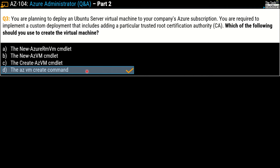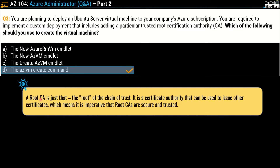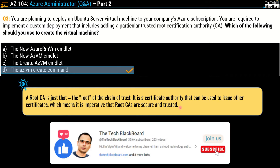In case you're wondering what a trusted root certification authority is — here is some documentation. The root CA is the root of the chain of trust; it's a certificate authority that can be used to issue other certificates, which means it is imperative that root CAs are secure and trusted. Now, there is one more variation of this same question. The main idea behind grouping these kinds of questions is that you pick the right answer no matter how much the questions are tweaked by Microsoft. It takes a lot of research and time to bring all these variations, so please take a moment to press that like button.